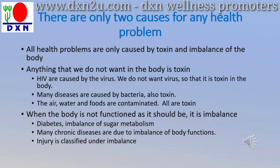Many diseases are caused by bacteria — we don't want bacteria inside the body, so it is also a toxin. Many problems today are also caused by contamination of oil, air, water, and food — all these are toxins. The second cause is imbalance. Diabetes is an imbalance of sugar metabolism. Hypertension is an imbalance of circulation. Even injury causes the body to not function as it should, so it also falls under the category of imbalance.